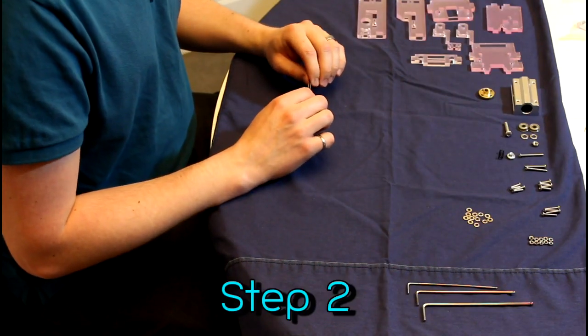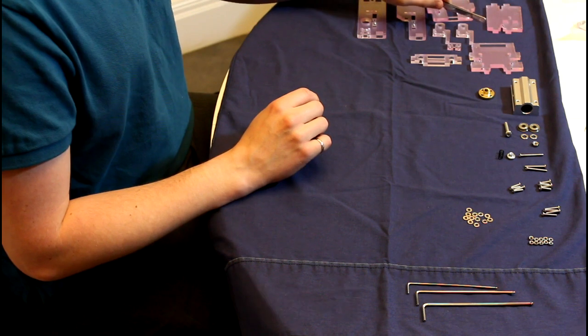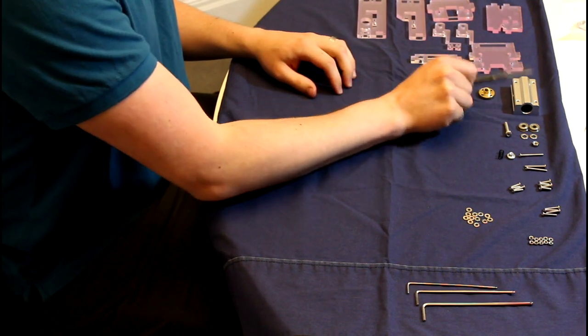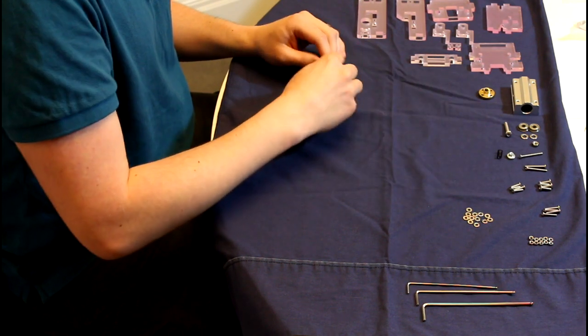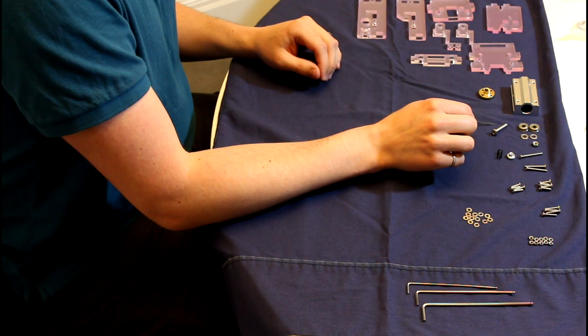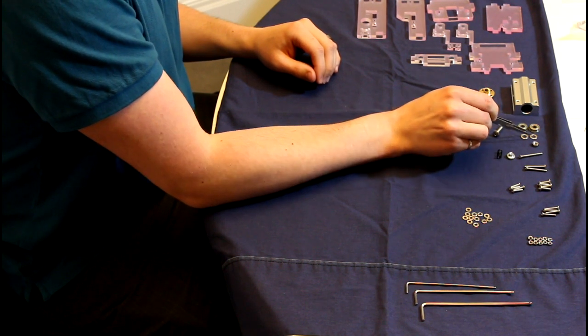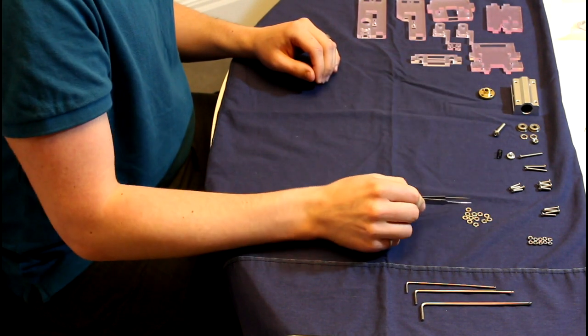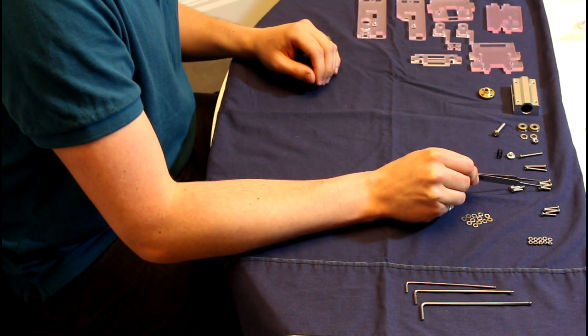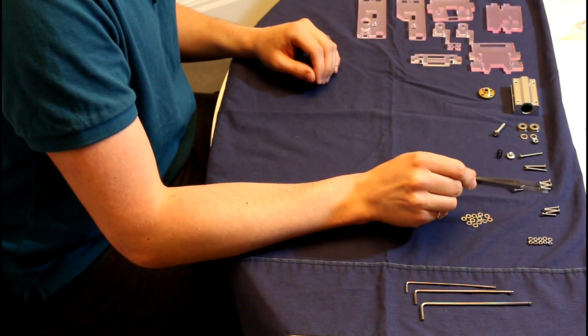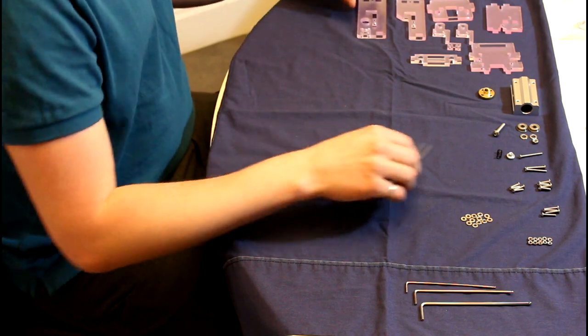So welcome to part two of the Sunhoki Prusa i3 build. What we have here for step two is nine acrylic parts, one T8 lead screw nut, one long box slider, one black screw, one flange nut, one M3 by 30 millimeter screw, one M5 by 25 millimeter screw, two single rollers, two M5 washers, one M5 nut, we've got 12 M3 washers, 10 M3 nuts, four M4 by 12 millimeter screws, four M3 by 12 millimeter screws, two M3 by 25 millimeter screws, and four M3 by 16 millimeter screws. So I'm going to peel off the plastic once again.